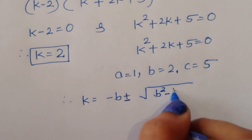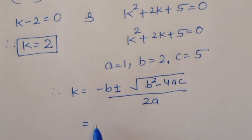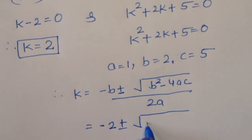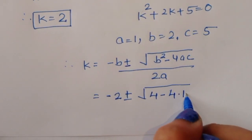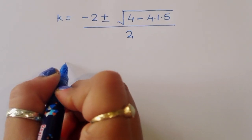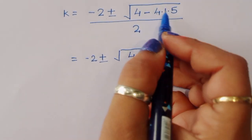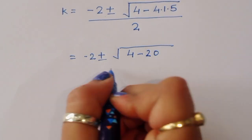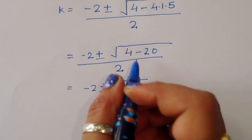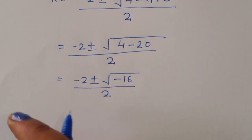Therefore, the value of k equals minus b plus or minus the square root of (b squared minus 4ac), all divided by 2a. So k equals minus 2 plus or minus the square root of (2 squared minus 4 times 1 times 5), divided by 2. That gives k equals minus 2 plus or minus the square root of (4 minus 20), divided by 2.